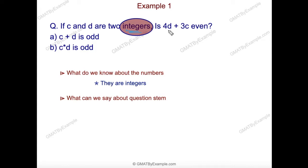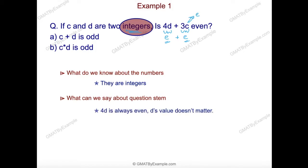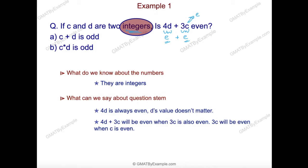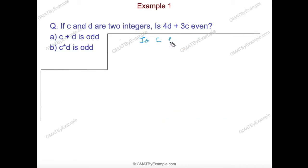The question asks: is 4d plus 3c even? If d is an integer, 4d is always an even number. So 3c must then also be even for even plus even to equal even. If 3c were odd, the total would not be even. Since 4d is always even, we are really asking: is 3c even? And 3c will be even only when c is even. So the real question becomes: is c even?